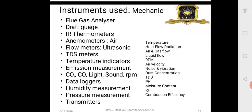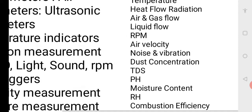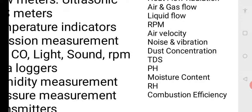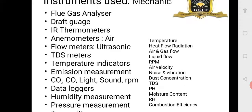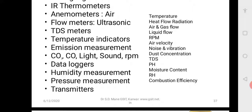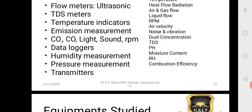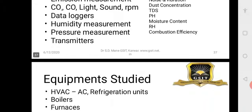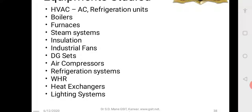Now let us look at instruments used for energy audits — mechanical. Parameters measured include temperature, heat flow, radiation, air flow, liquid flow, RPM, air velocity, noise, vibration, dust, TDS, pH values, moisture, relative humidity, and combustion. For measuring these parameters you have flue gas analyzers, draft gauges, IR thermometers, thermometers, anemometers, flow meters, TDS meters, temperature indicators, emission measurement equipment, and nowadays multi-tasking equipment which measures three or four quantities in a single device with data logging facilities.